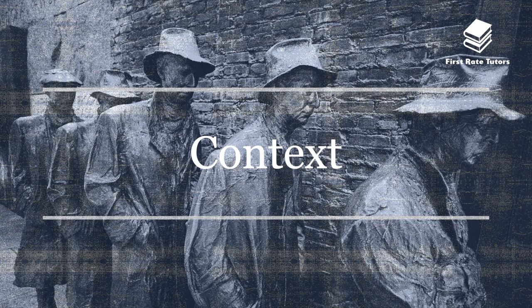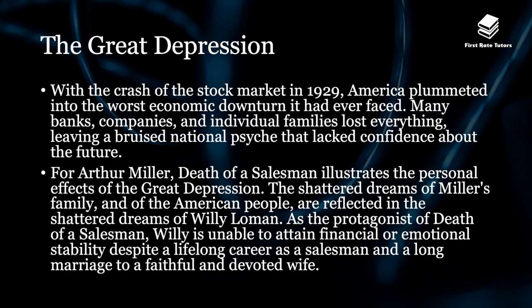When it comes to context, the first important factor is the Great Depression. The Great Depression was a terrible economic period for America lasting between 1929 to roughly 1939, when America plummeted into the worst economic downturn it had ever faced. Many banks, companies and families lost everything, leaving a bruised national psyche that lacked confidence about the future. For Arthur Miller, Death of a Salesman illustrates the personal effects of the Great Depression, and the shattered dreams of his own family are reflected in the shattered dreams of the main protagonist, Willy Loman.